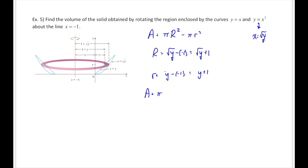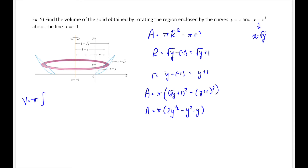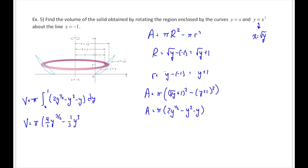Our area is then π times [(square root of y plus 1) squared minus (y plus 1) squared], which gives us π(2y to the one-half minus y squared minus y). Our volume is π times the integral from 0 to 1 of (2y to the one-half minus y squared minus y) dy, since our slices are running horizontally and we are integrating vertically. Taking the anti-derivative gives π times [four-thirds y to the three-halves minus one-third y cubed minus one-half y squared] evaluated from 0 to 1. Substituting the values gives a volume of π over 2 cubic units.